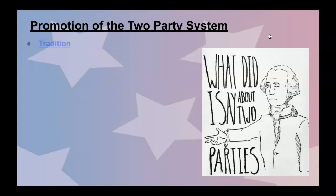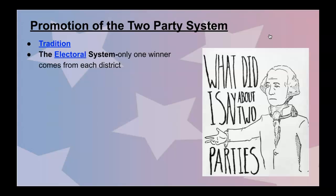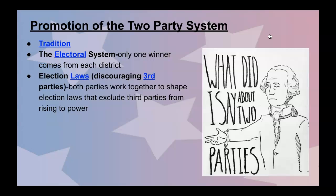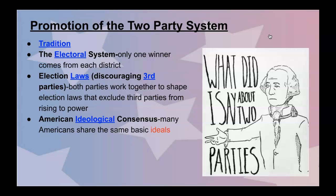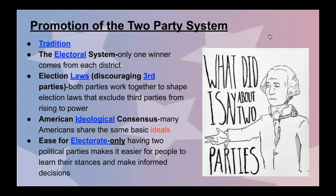So what is the promotion of the two-party system and why do we need two parties in America? You could look at it from a variety of standpoints — tradition, for one, since we've been doing this for quite some time. The electoral system basically chooses just one winner from a district, making elections clear-cut. Election laws also discourage third parties; both parties work together to shape election laws that systematically exclude third parties from rising to power. The American ideological consensus means many Americans share the same basic ideals. And it's simply easier for the electorate — only having to choose between two sides makes voting incredibly simple.